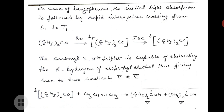Now let us study the mechanism of this reaction. In the case of benzophenone, the initial light absorption is followed by rapid intersystem crossing from S1 to T1. The ground state of benzophenone absorbs a light photon and a singlet excited state of benzophenone is formed. This singlet excited state then undergoes intersystem crossing to form the triplet excited state of benzophenone.